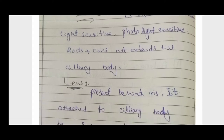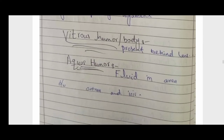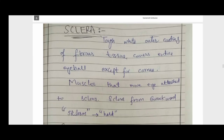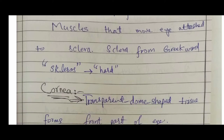The rod and cone cells end behind the ciliary body. The lens is present behind the iris and is attached to the ciliary body by the suspensory ligament, whose function is to fix the lens in its position. The vitreous body is present behind the lens. Aqueous humor is a fluid present in the area between the cornea and the iris. The sclera is basically a tough white outer coating of fibrous tissue that covers the entire eyeball except for the cornea. Muscles that move the eyeball are attached to the sclera. Sclera is a Greek word meaning 'hard.'